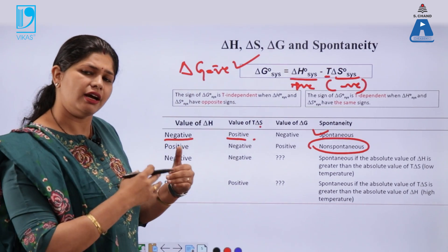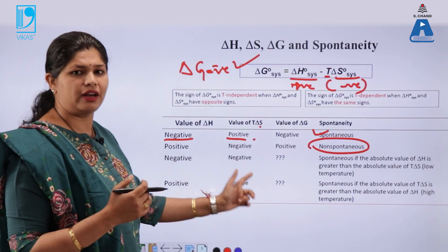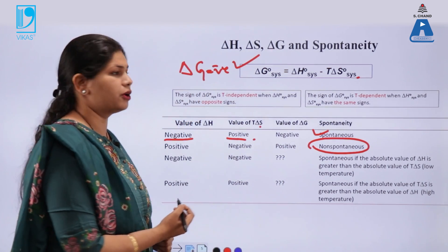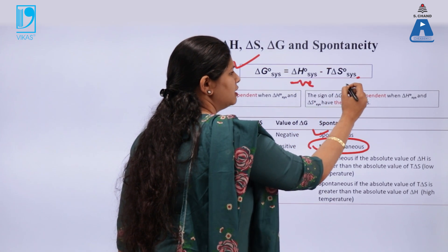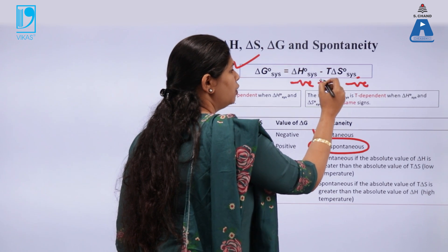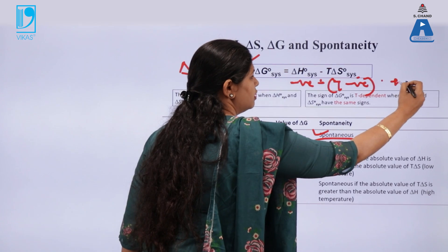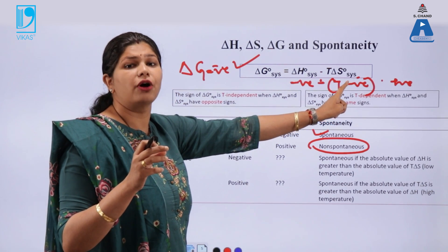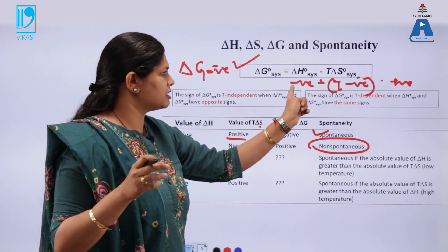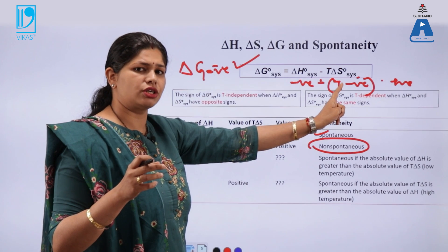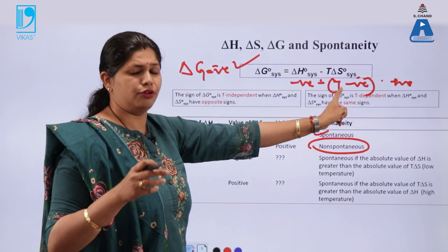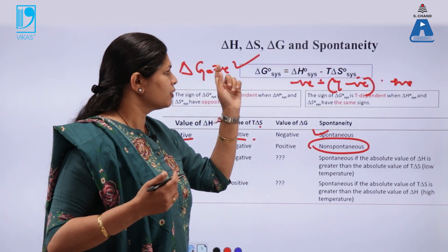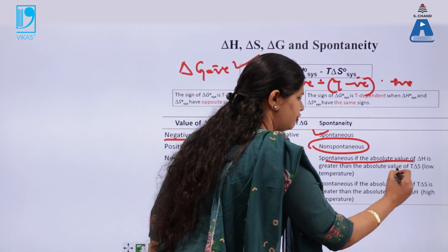What happens when delta H and delta S have the same signs? If both are negative, then temperature will determine the criteria of spontaneity. If this factor is negative and T delta S is also negative, the whole term becomes positive. Unless I have a highly exothermic reaction — that is, if delta H is highly negative — the reaction will be spontaneous. But on raising the temperature, T delta S will dominate and delta G will become positive. So the reaction is only spontaneous at low temperature.